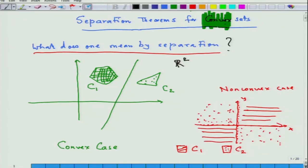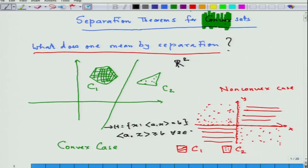I will mathematically describe this. Suppose this hyperplane H is given as the set of all x — I am writing in the general sense of Rⁿ though everything is in R². Suppose this is what the hyperplane is; then A·z where z belongs to C₁ is greater than or equal to B for all z in C₁.